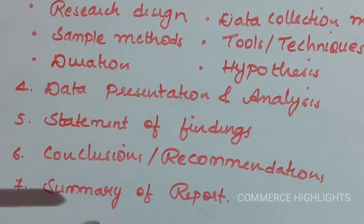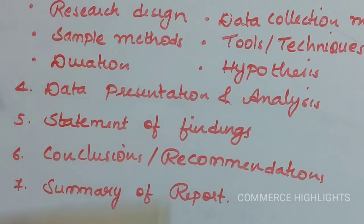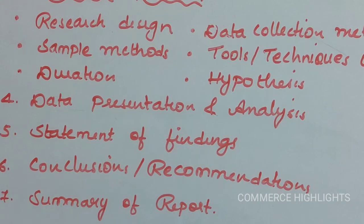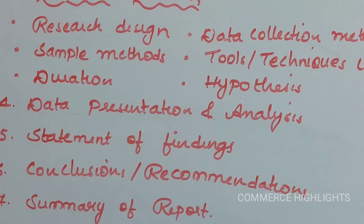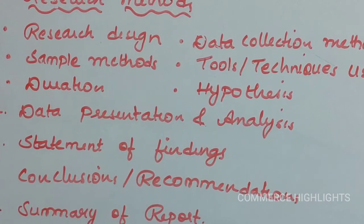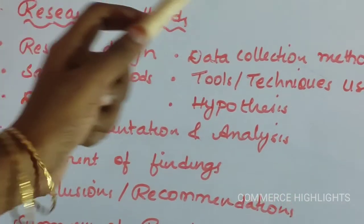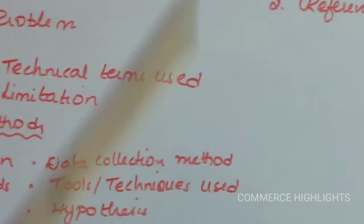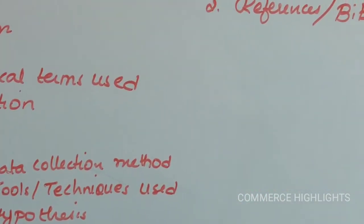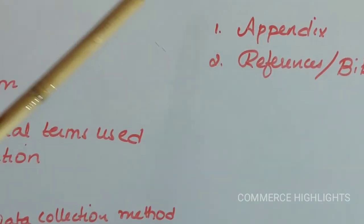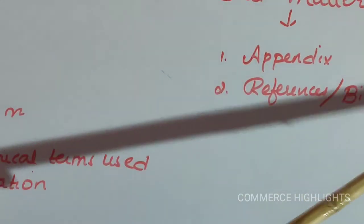The last part of the main body is the summary of the report, written at the end. It contains a brief statement of what has been done by the researcher in his research work. Coming to the third section — the end matter or references section — this section should include two things: appendix and references or bibliography.